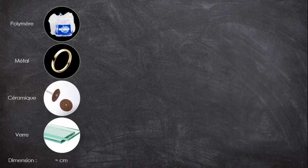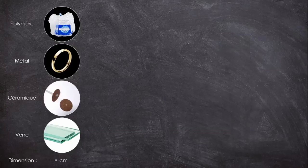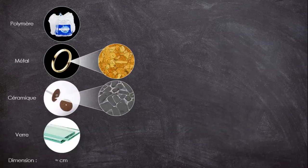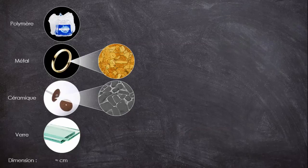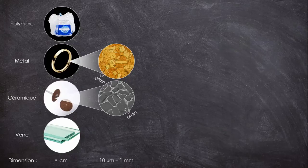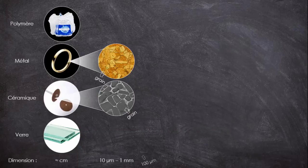Alors si on commence à zoomer dans ces matériaux avec un microscope optique par exemple, voici ce qu'on observe. Pour l'or et le carbure de silicium, on va constater la présence de plein de petites surfaces délimitées par des traits assez marqués. Ce sont ce que l'on appelle des grains, et la frontière entre chacun d'entre eux est appelée un joint de grains. Les tailles varient typiquement de quelques microns au millimètre. Pour faire la comparaison des tailles, voici un cheveu à l'échelle.